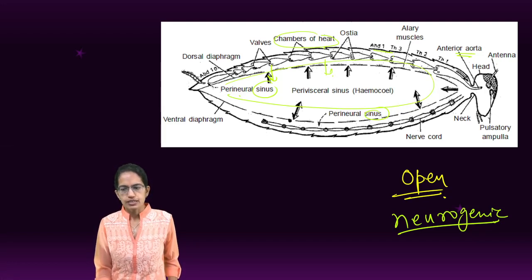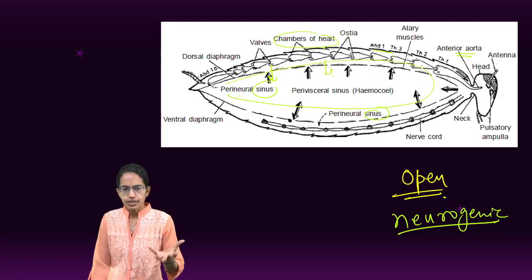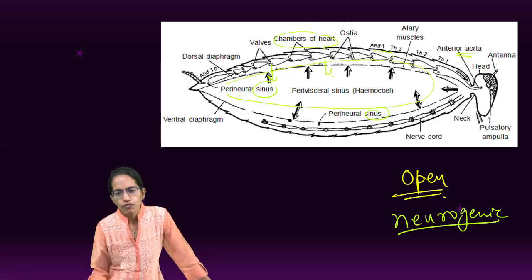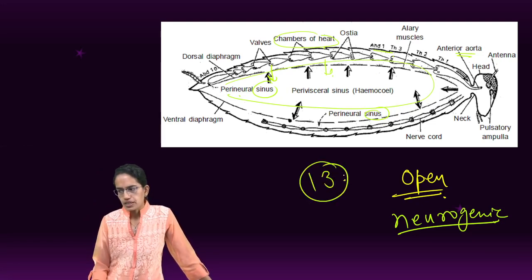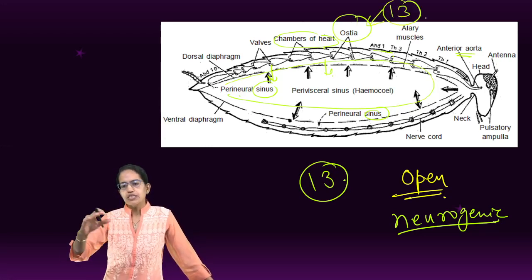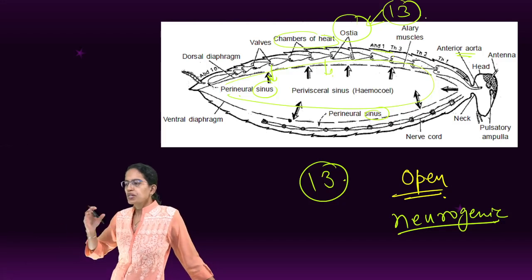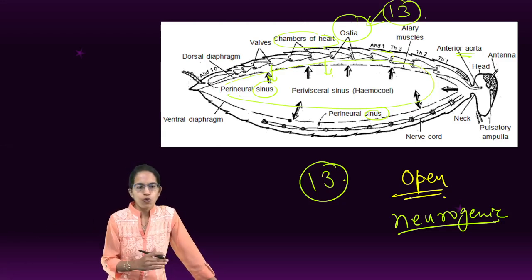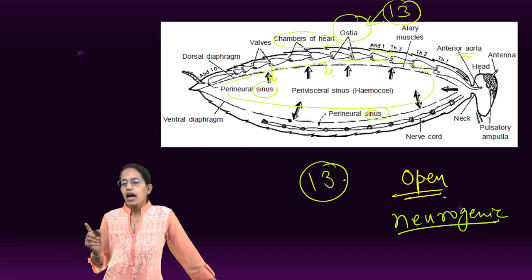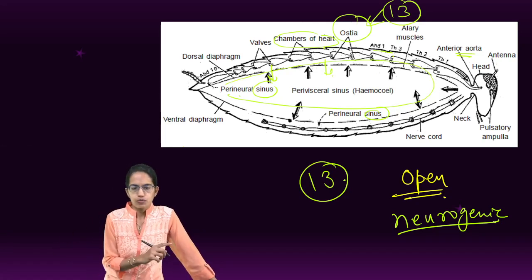There is a pericardial sinus in which this whole heart gets enclosed. The elongated muscular tubules, as you can see, consist of 13 different funnel-shaped chambers. These are known as ostea. There are 13 such ostea or funnel-shaped structures which are present and this allows the blood to flow from the pericardial sinus into the heart only and does not allow a reverse movement.